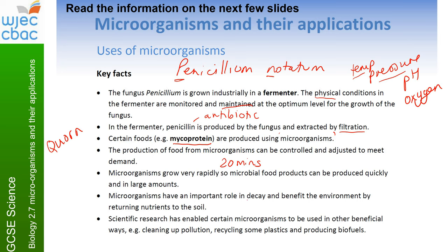Microorganisms also have a key role in decay and can benefit the environment by returning nutrients to the soil — we learned about that in year 10 with the nitrogen cycle. Scientific research has also enabled certain microorganisms to be used in other beneficial ways: cleaning up pollution after oil spills, recycling some plastics, producing biofuels, and even making the foods of tomorrow. Mycoproteins are just one of many other ways they're being used.